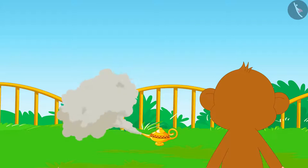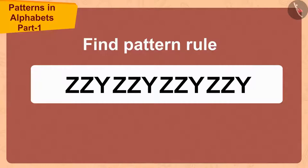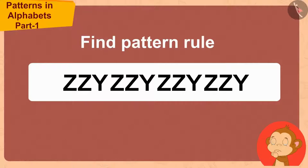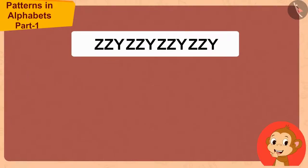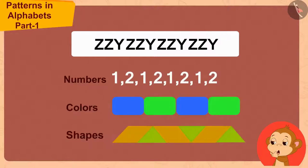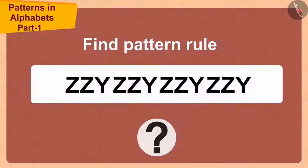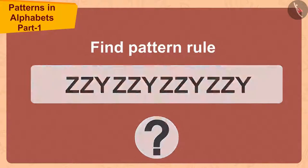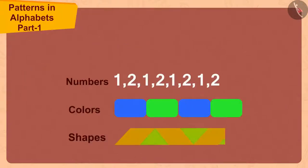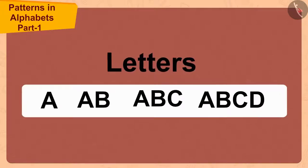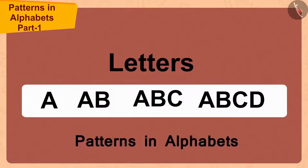"Babban, as you wish, my lord." Saying this, the genie showed Babban a pattern. Babban was baffled for a while. "I have seen patterns made of numbers, colors and shapes. But in this pattern, I can see only letters." Children, have you seen such a pattern before? Like we make different patterns from numbers, colors and shapes, similarly we can also make patterns by using letters. Such patterns which are made using letters are called patterns in alphabets.